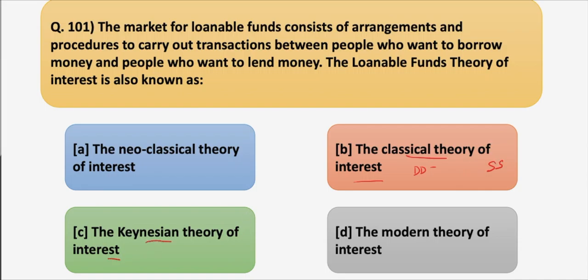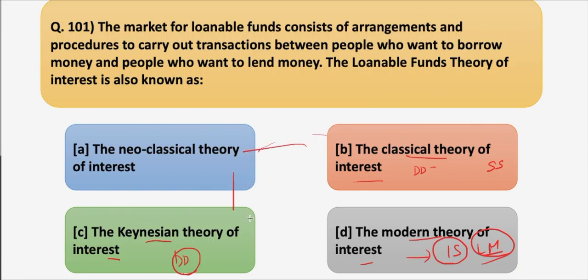In the Keynesian theory, the demand for money means the demand for liquidity — the demand to hold money in cash for the transactions motive, precautionary motive, and speculative motive. The supply of money is fixed and controlled by the monetary authority and is perfectly interest inelastic. The modern theory of interest uses the IS-LM framework, where LM represents the money market and IS represents the investment and savings market. So the answer to this question is the neoclassical theory of interest.